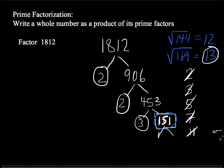Therefore, no number will divide into 151. In fact, I'm stopped there at 151. So now I can write out my answer. That's 1,812 is equal to 2 squared times 3 times 151.